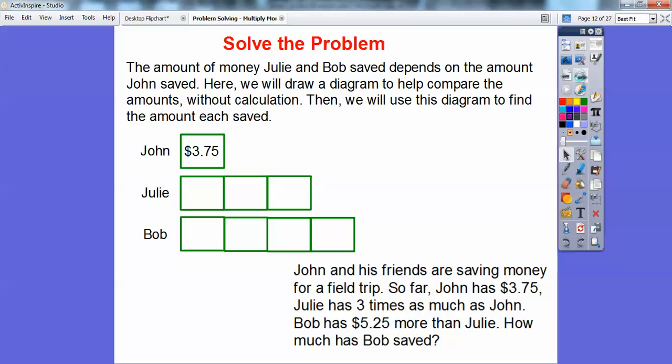Let's put in $3.75 in each one of that because it's three times that. So $3.75, $3.75, $3.75. And then it says Bob has saved $5.25 more than Julie. So he's going to have these same three bars plus another one for the $5.25 right there. He saved as much as Julie plus $5.25 more.